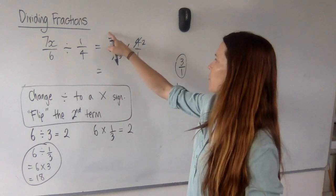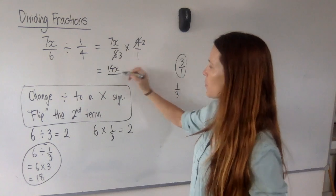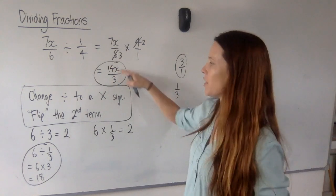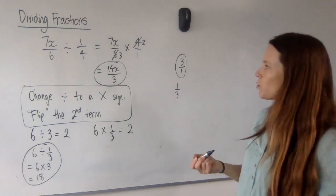and now I've got 7x times 2, that's 14x, and on the bottom I've got 3 times 1, that's 3, and I'm finished. And a question that looks really hard is actually quite straightforward to do with this method.